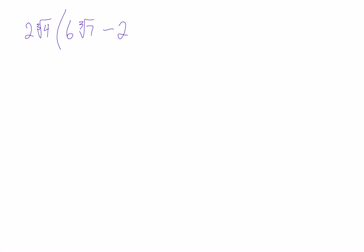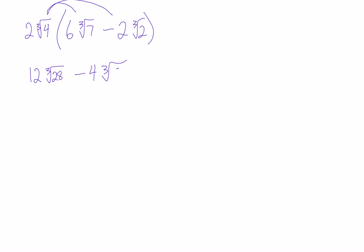Sometimes you'll have brackets involved. Let's look at one with 2 cube root 4 — cube root this time, but the same rules apply. If we have two things in brackets, we need to FOIL it out and multiply all combinations. So 2 times 6 is 12, and 4 times 7 is 28. Then 2 times negative 2 is negative 4, and 4 times 2 inside the root is 8. Now simplify: cube root of 28 doesn't simplify, but cube root of 8 is just 2. So 4 times 2 is 8, giving a final answer of 12 cube root 28 minus 8.